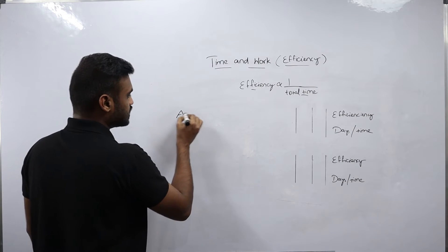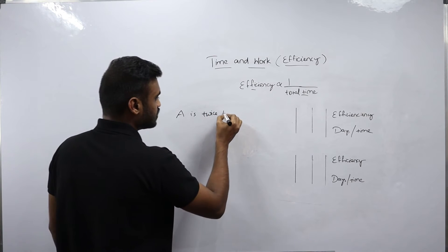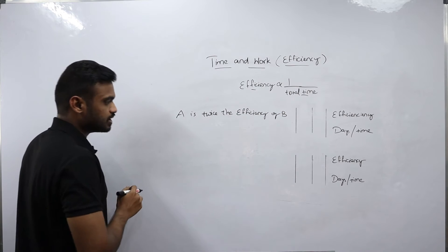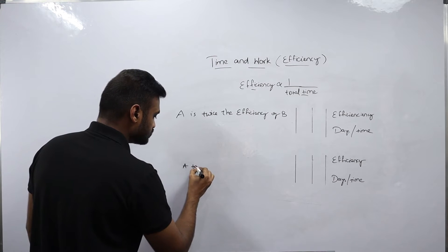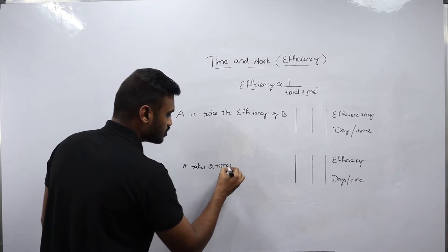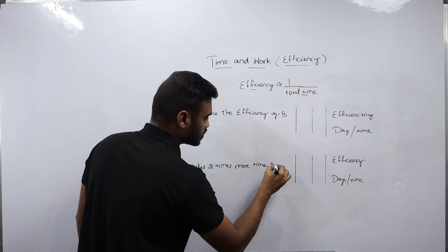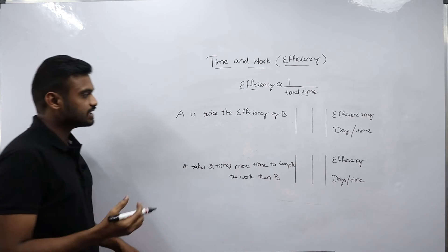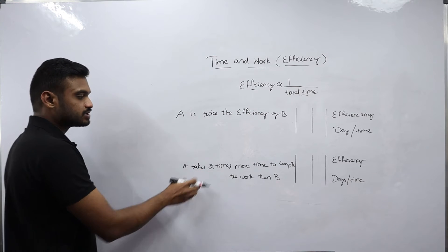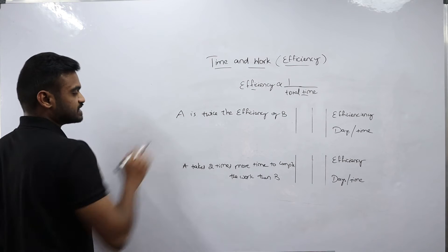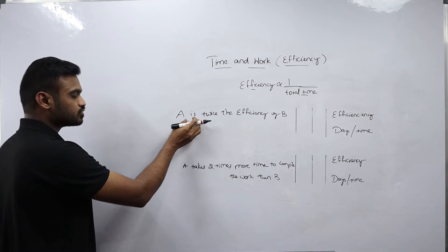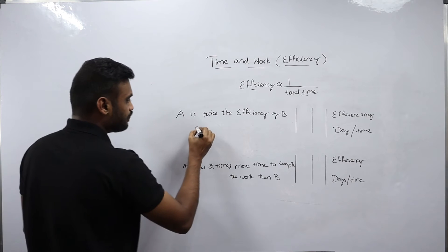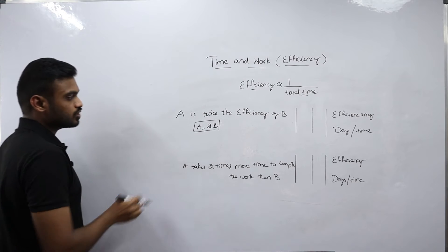First example: assume A is twice the efficiency of B. So A does the work two times better than B, meaning we can write A equals 2B in efficiency. If I assume the efficiency of B as x, then the efficiency of A will become 2x.